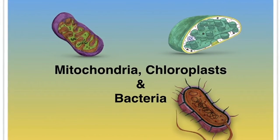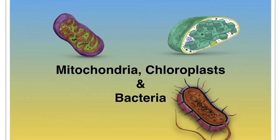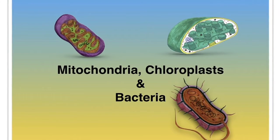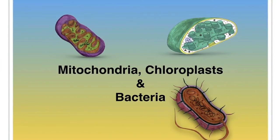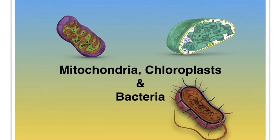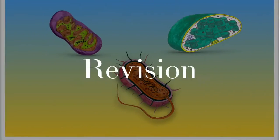This video is about comparing mitochondria and chloroplasts — those organelles found in eukaryotic cells — with bacteria, which are prokaryotic. The reason for this comparison is evolution. Scientists believe that the mitochondria and chloroplasts evolved from bacteria.